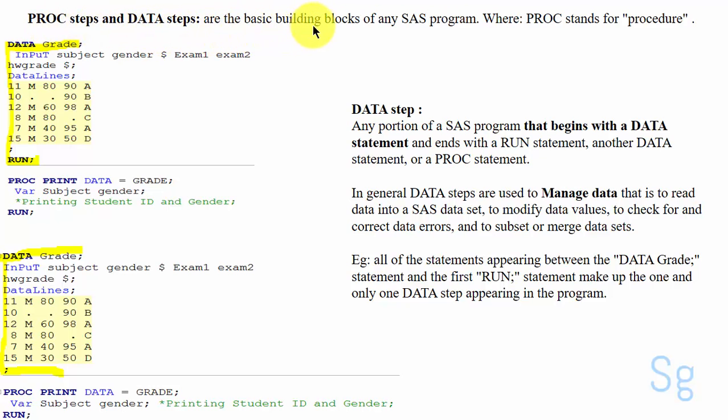PROC steps and DATA steps are the basic building blocks of any SAS program, where PROC stands for procedure. A DATA step is any portion of a SAS program that begins with a DATA statement and ends with a RUN statement, another DATA statement, or a PROC statement.